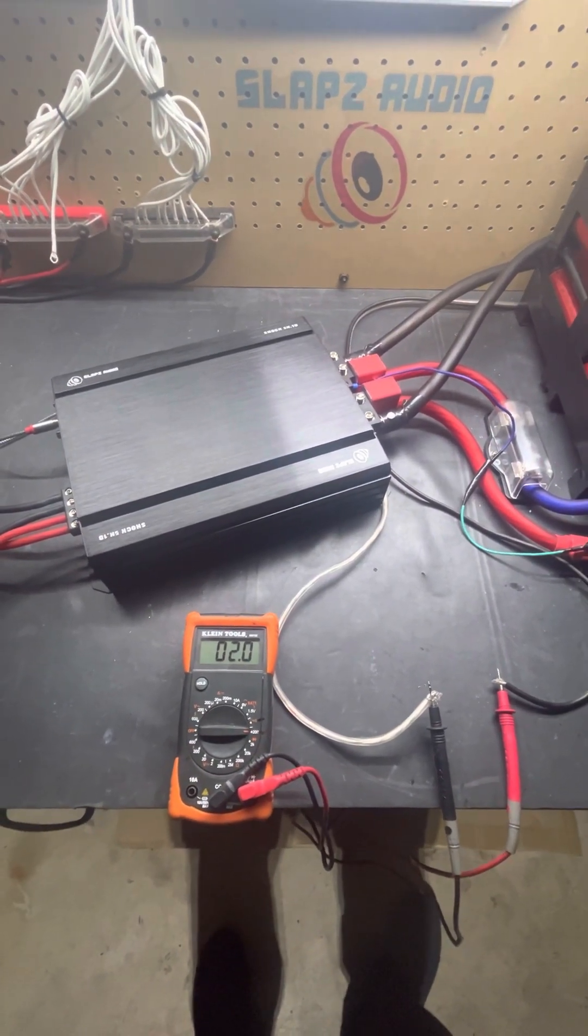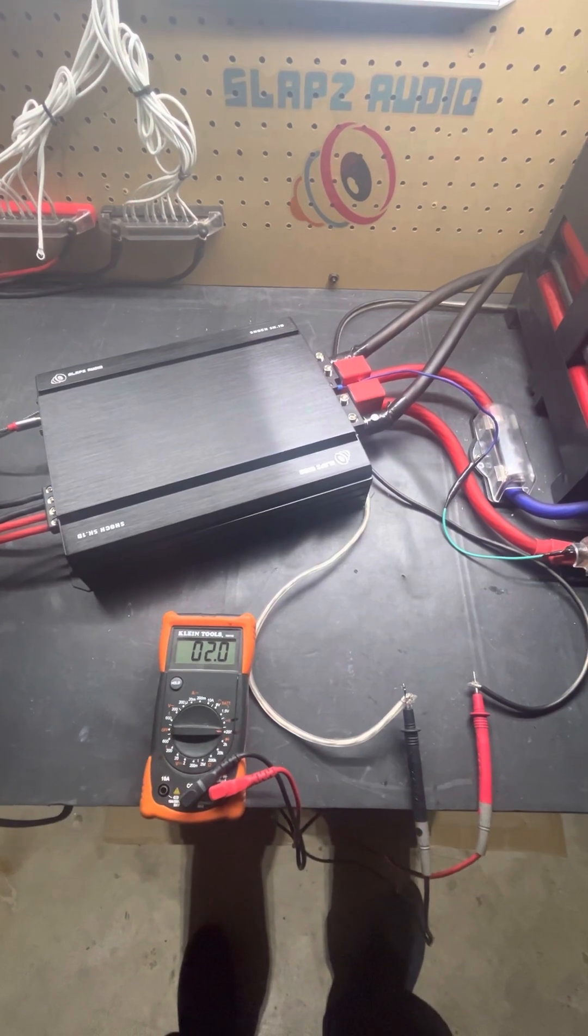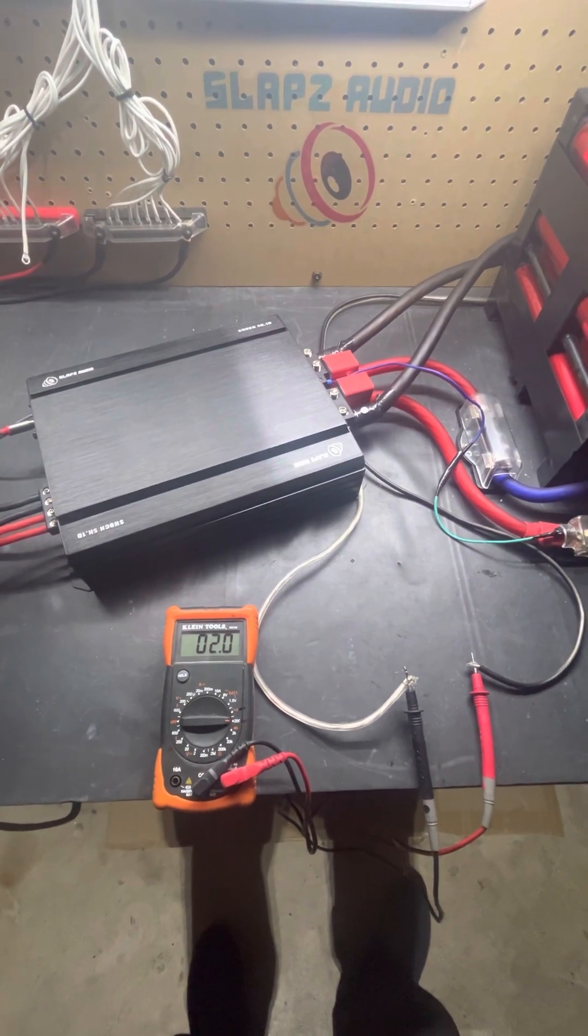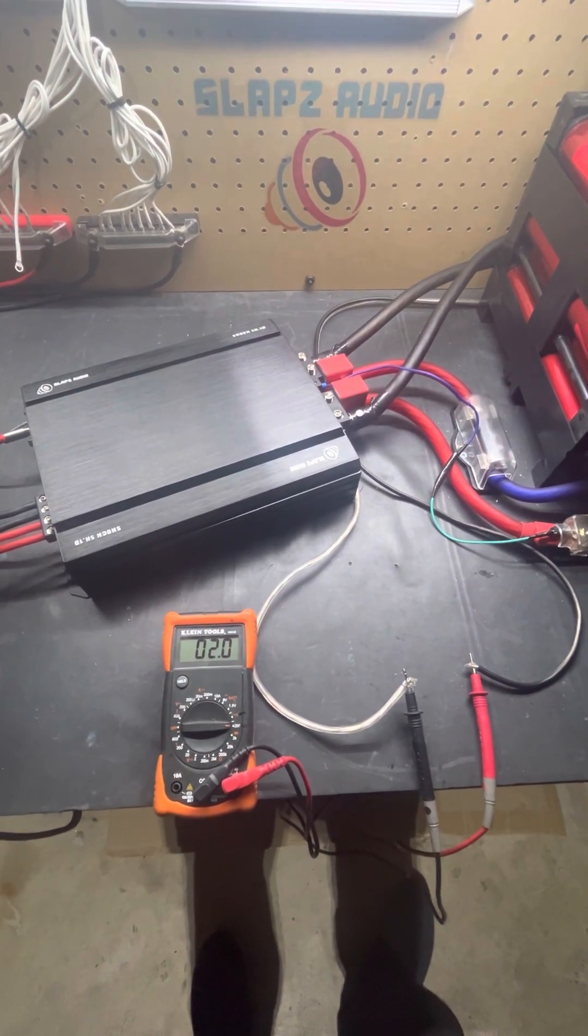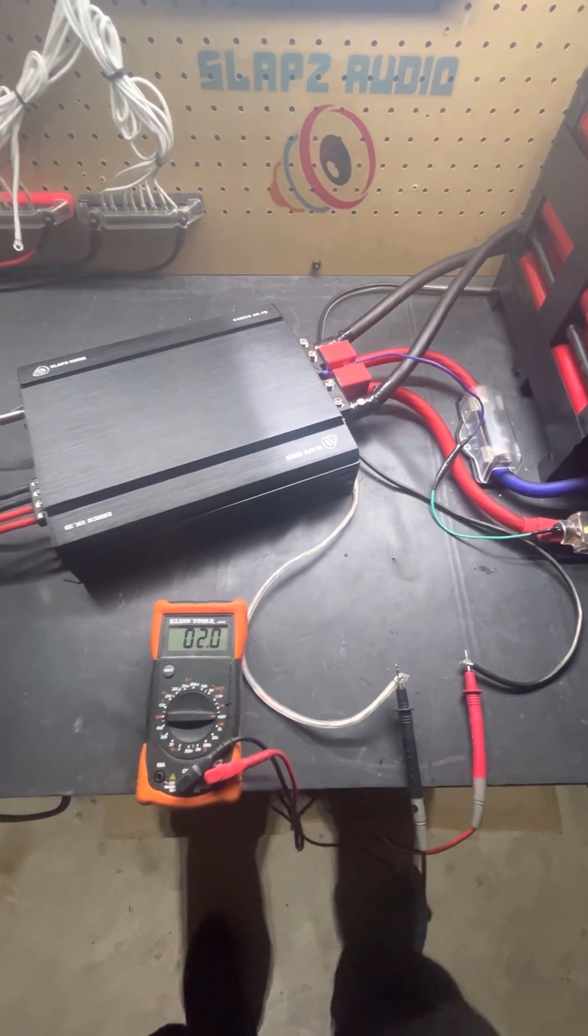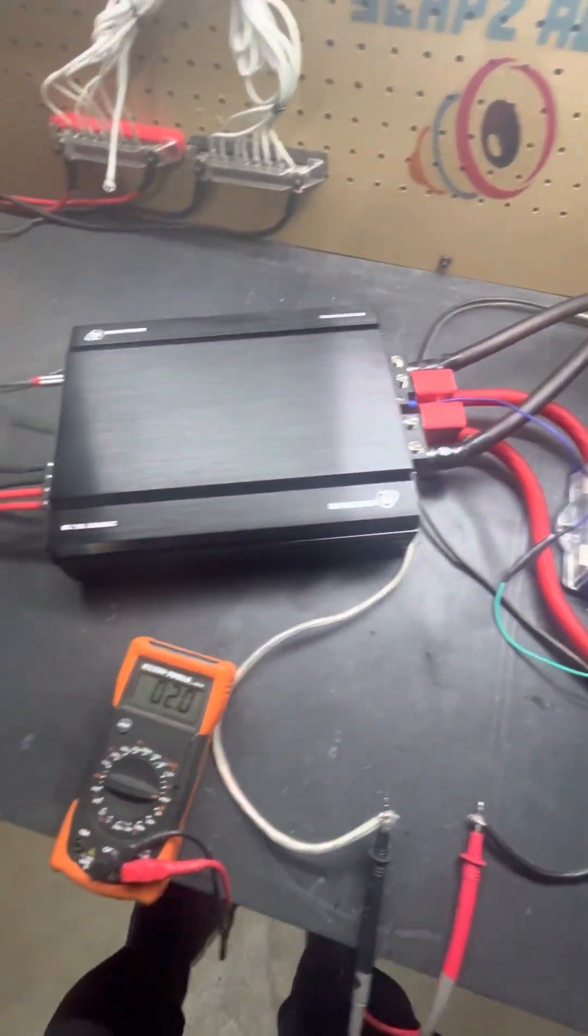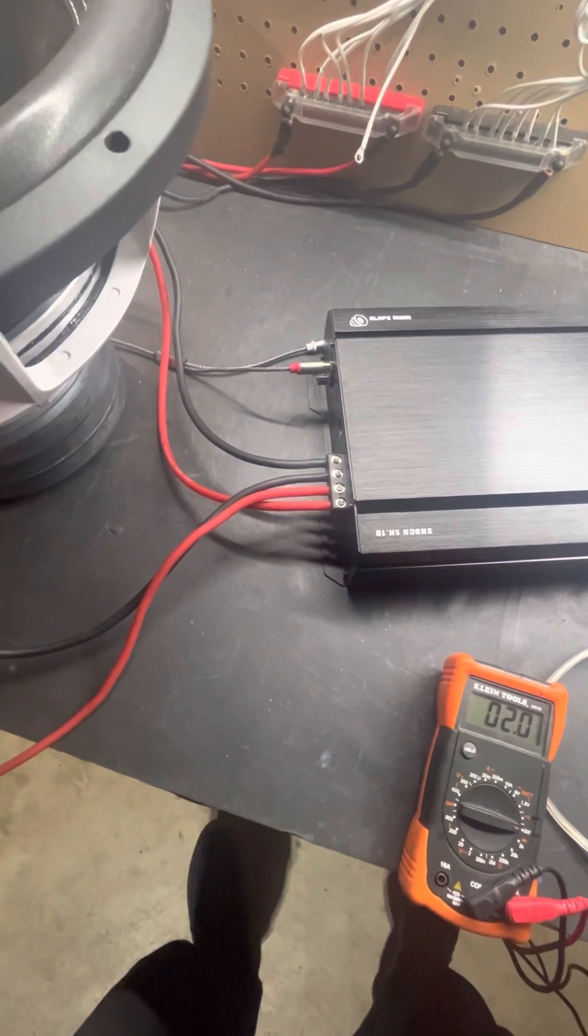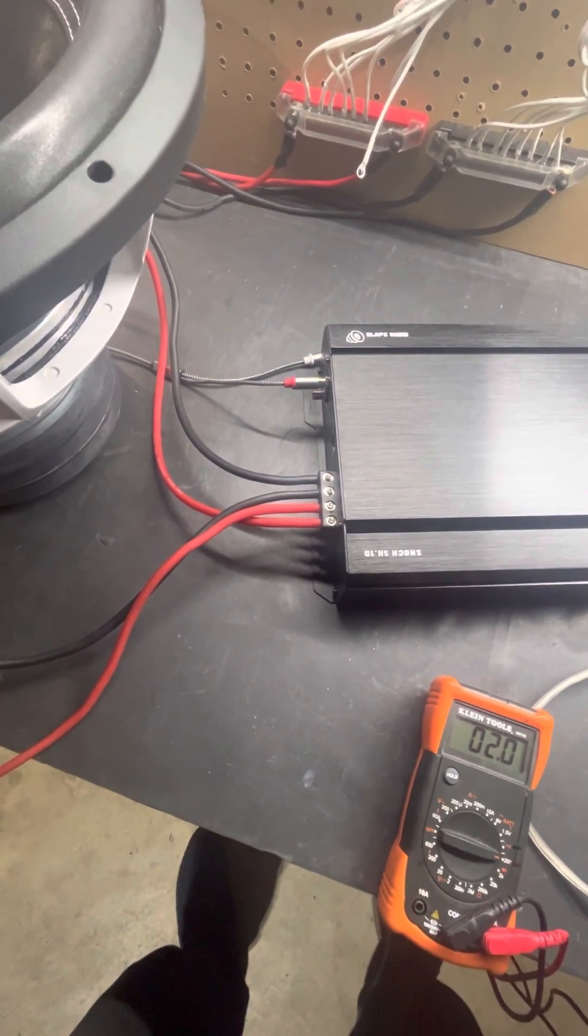Hi, Alan with Slaps Audio here. Just wanted to do a quick installation tutorial on how to connect our amplifiers when it comes to the input wiring, power and ground, and then also the speaker outputs on our 3k, 5k, and 8k.